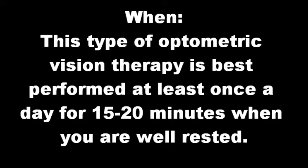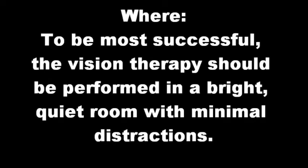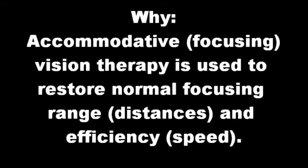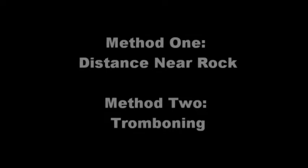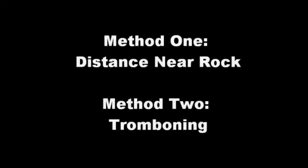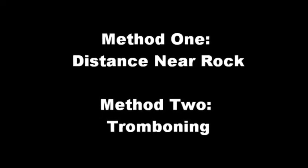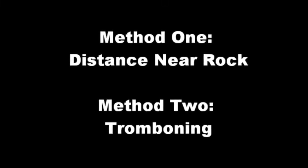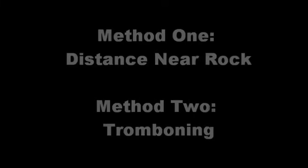This type of optometric vision therapy is best performed at least once a day for 15 to 20 minutes when you are well rested. To be most successful, the vision therapy should be performed in a bright, quiet room with minimal distractions. Accommodative or focusing vision therapy is used to restore normal focusing range and efficiency. Two methods of performing heart chart accommodative rock vision therapy are: one, distance near rock, and two, tromboning.